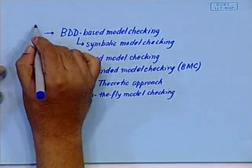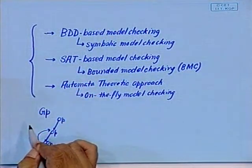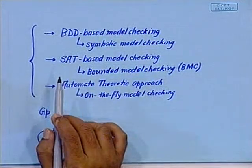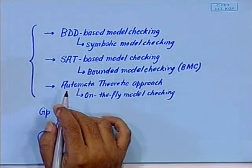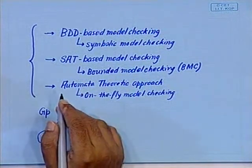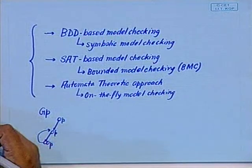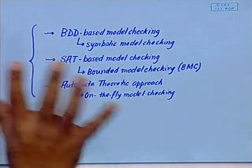Those are broadly the three core approaches followed for model checking: BDD/symbolic, SAT/BMC, and automata-theoretic on-the-fly. In addition, there are many techniques to reduce the size of the state space — pruning parts not necessary for proving a particular property, using environment assumptions, and counter-example guided abstraction refinement (CEGAR).